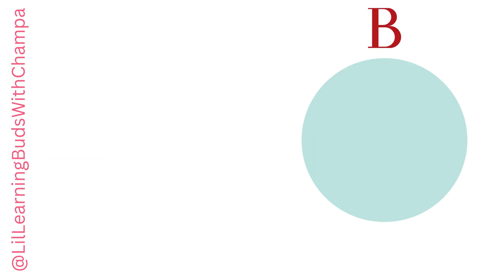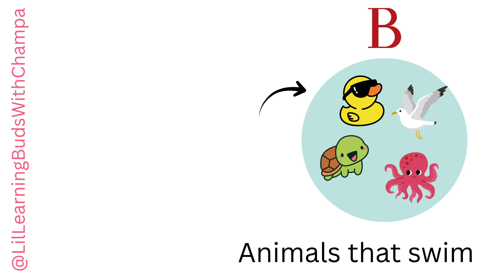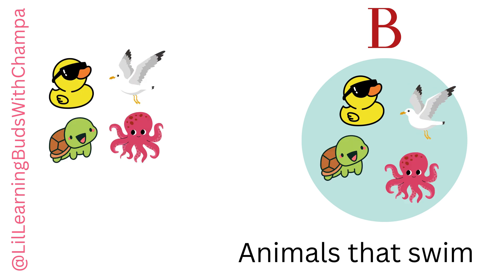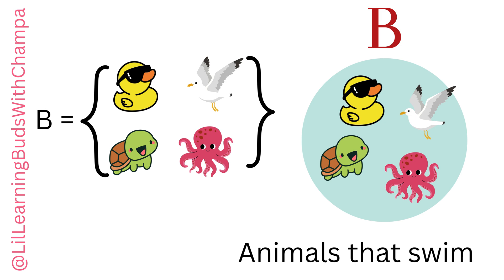Now let's do the same thing with Circle B. Here, let's fill animals that can swim — for example, Duck, Seagull, Turtle, and Octopus. Now this becomes Group B or Set B. So Set B has Duck, Seagull, Turtle, and Octopus.